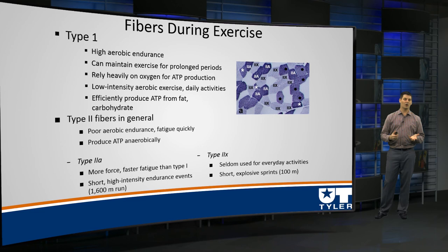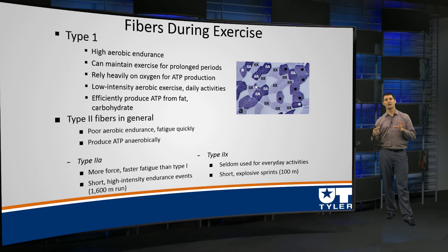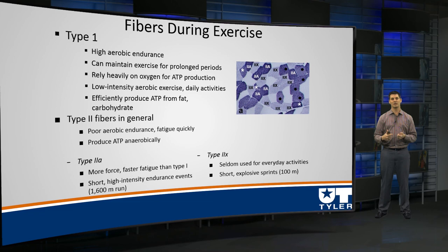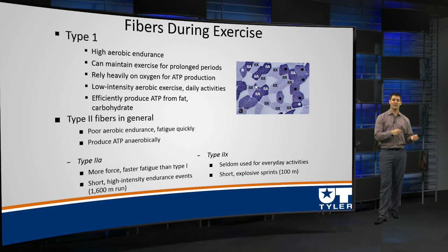We'll also talk about fiber types in response to exercise. The benefit of having three different fiber types is that they give us varying contributions to exercise. Our type 1 fibers are fatigue resistant — which should ring a bell that they'd be really good for a long run. These have high aerobic endurance and are great at maintaining exercise for a prolonged period of time because they can generate so much ATP from oxidative metabolism. This is usually lower intensity exercise. They produce ATP greatly from fat and carbohydrate, especially fat. Endurance athletes have an incredibly high number of type 1 muscle fibers.